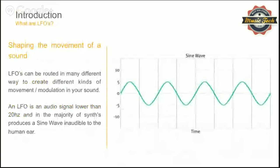When we covered modulation effects like chorus, flange, phaser and things like that, we discussed how a lot of these effects were controlled using an LFO. The LFO is called a low frequency oscillator. It operates below 20 hertz, so you can't really hear it — it's inaudible to the human ear. The reason for this is it's used as a signal path, so you can chain different elements onto it.